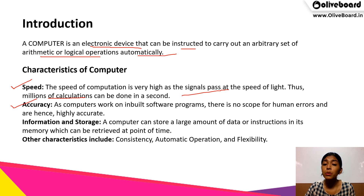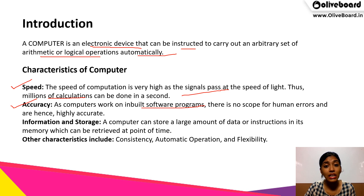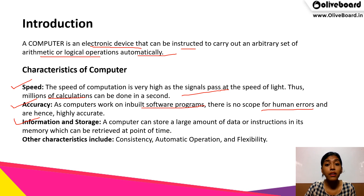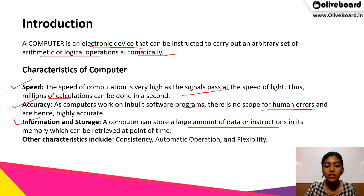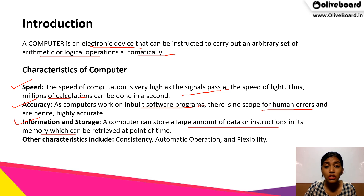Accuracy: computers work on inbuilt software programs. There are various software programs that we keep in our computers for it to run smoothly and quickly. Hence, the accuracy level is also very high and there is no scope of human errors. Third is information and storage. Our computer can store a large amount of data, much more than our brain can also store. The memory can be retrieved at any point of time — whenever we need anything from our computer, it just provides us with that data.